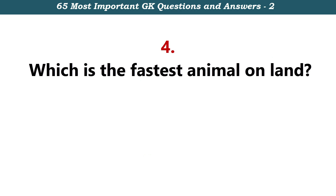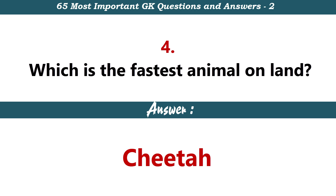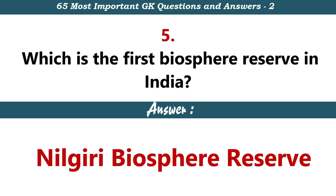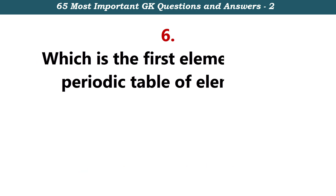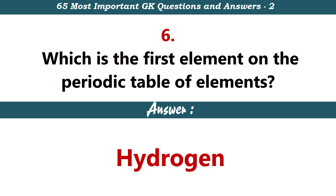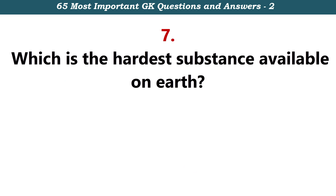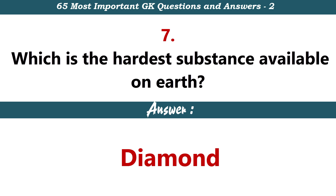Which is the fastest animal on land? Cheetah. Which is the first Biosphere Reserve in India? Nilgiri Biosphere Reserve. Which is the first element on the periodic table of elements? Hydrogen. Which is the hardest substance available on Earth? Diamond.